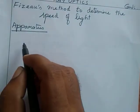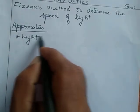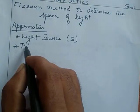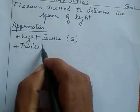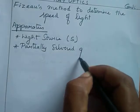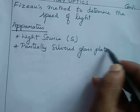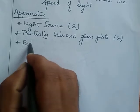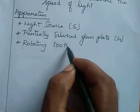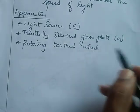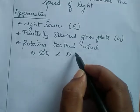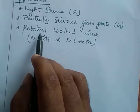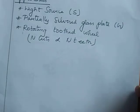The apparatus of the experiment: the first one is a light source. The second one is a partially silvered glass plate. Then there is a rotating toothed wheel having N cuts and N teeth. The rotating speed is adjusted by some external mechanism.